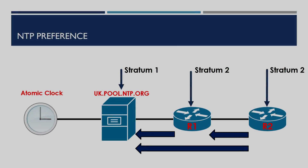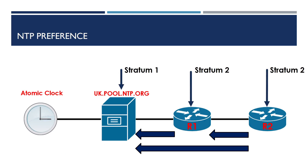Now let's take a look at the preference of stratum within NTP. In this new topology, R1 is configured to use the UK pool NTP server, meaning that it's a stratum 2 device. R2 on the other hand is configured to use the UK pool NTP server and also R1 as its time source. Therefore, as the UK pool NTP server has a lower stratum number than R1, R2 will use this as its time source and R1 will have a stratum number of 2. In the event that the link between the UK pool NTP server and R1 isn't available, R2 will use R1 as its time source and will become a stratum 3 device.